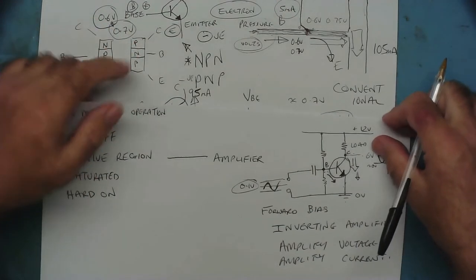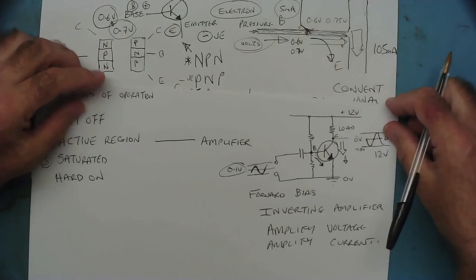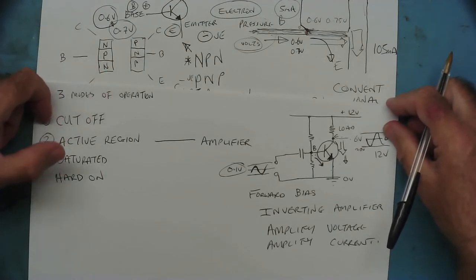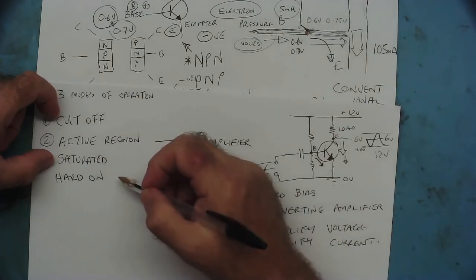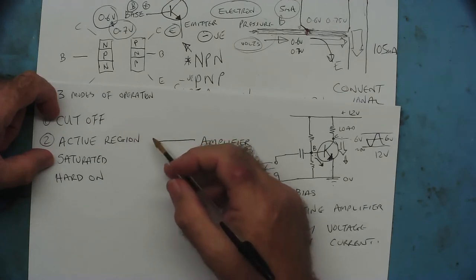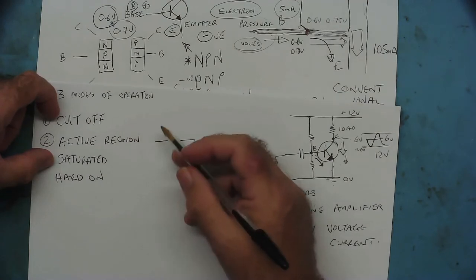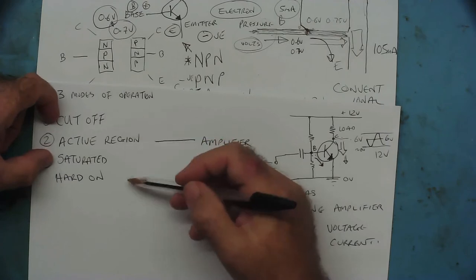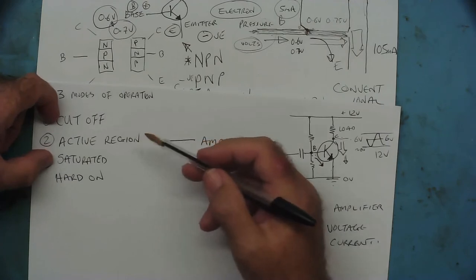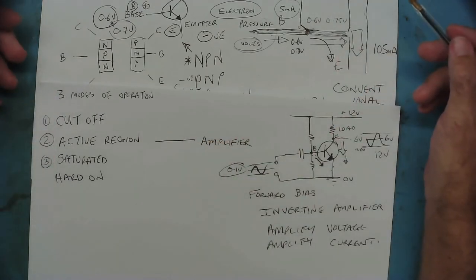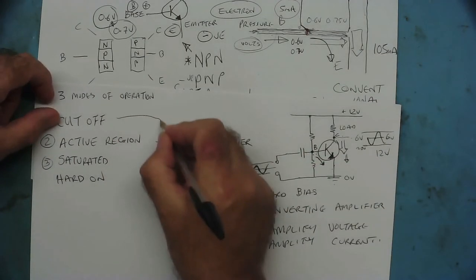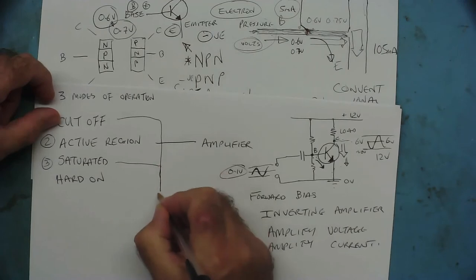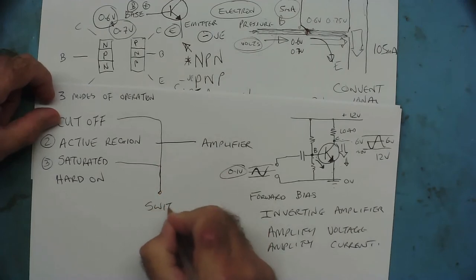The other thing we talked about is that transistors can be cut off or saturated - so we can have circuits where the transistor is either cut off or saturated, never in between. It has to pass through the active region briefly, but that could be picoseconds. In this case, using cut-off and saturation, the transistor is acting as a switch.